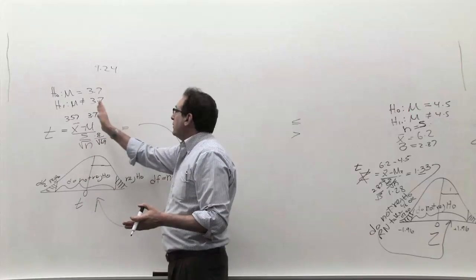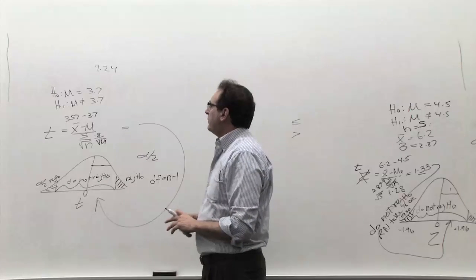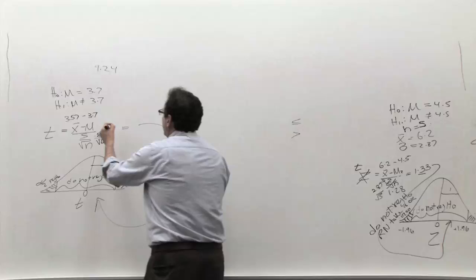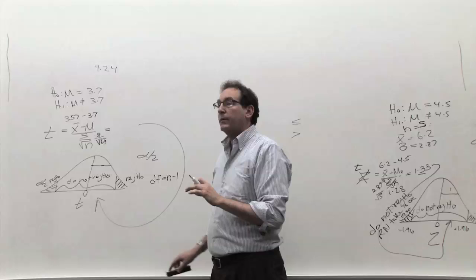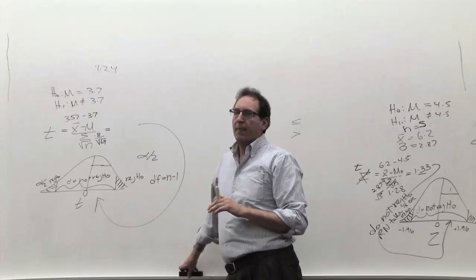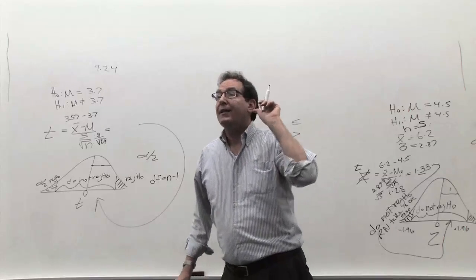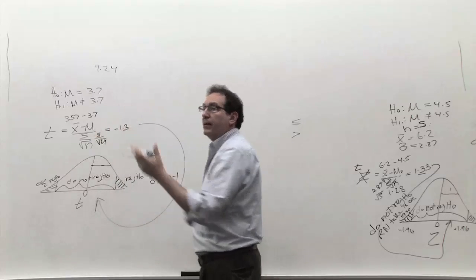So, of course, the next step is simply plug those numbers into the formula, into the calculator, which comes out to a negative number, I believe, so the 3.57 is lower than 3.7. What does that come out to? I think it's negative 1.3. Negative 1.3, thank you. If anybody disagrees with it, let me know.